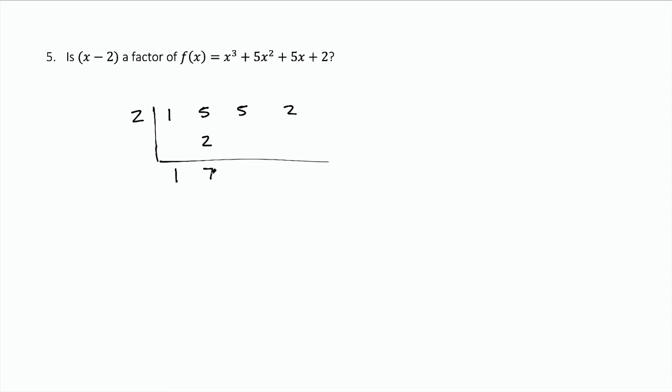5 plus 2 is 7. 7 times 2 is 14. 5 plus 14 is 19. 19 times 2 is 38. And 2 plus 38 is 40.